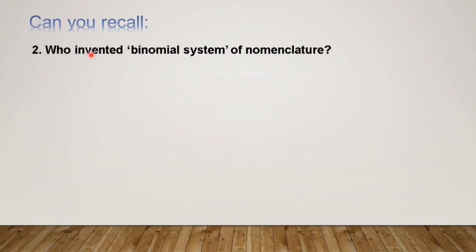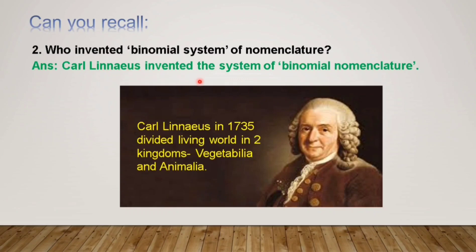The next question is: who invented the binomial system of nomenclature? Nomenclature is a system where you give a scientific name to animals, plants, or certain species or organisms. It was Carl Linnaeus who invented the system of binomial nomenclature. In 1735, Carl Linnaeus divided the living world into two kingdoms: Vegetabilia and Animalia. In Vegetabilia, all the plants are included, whereas in Animalia, all the animals are included.